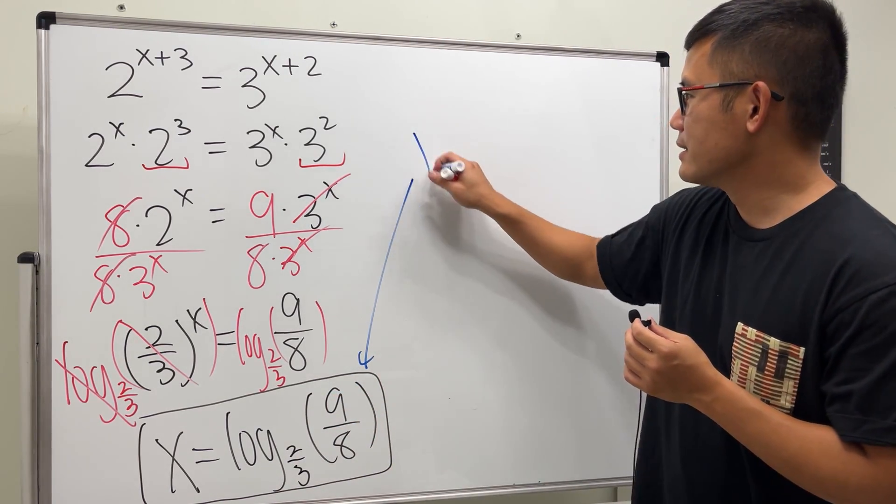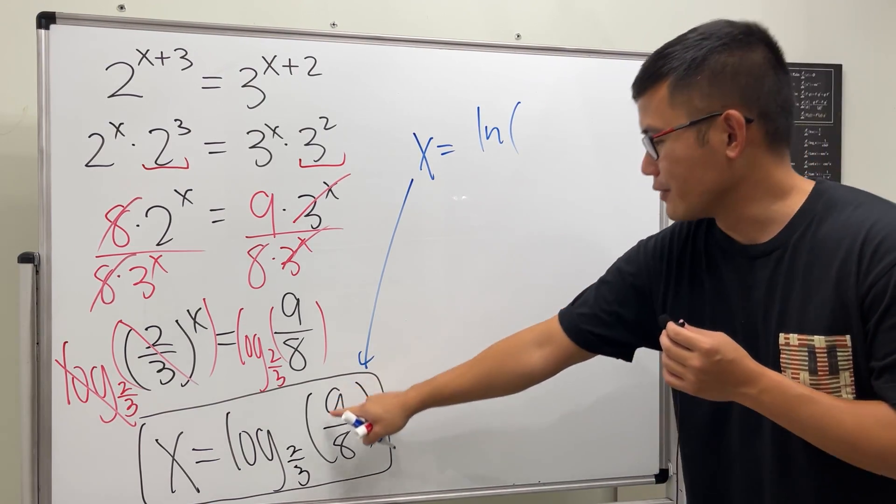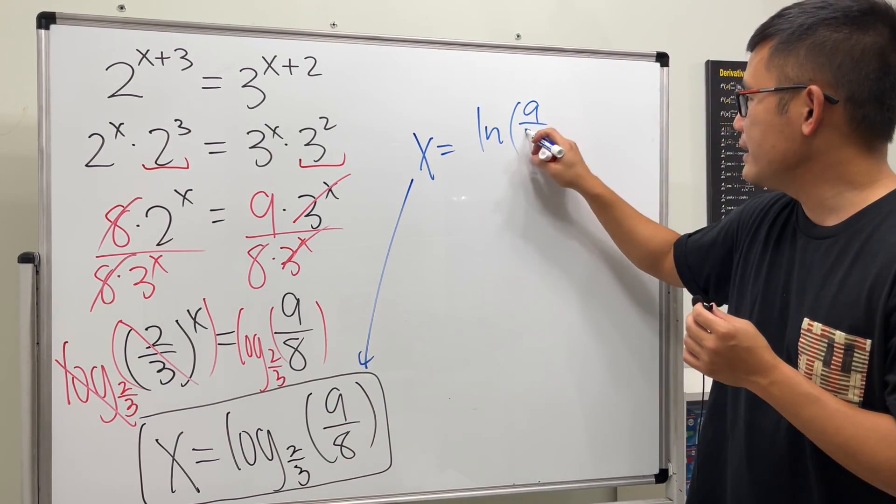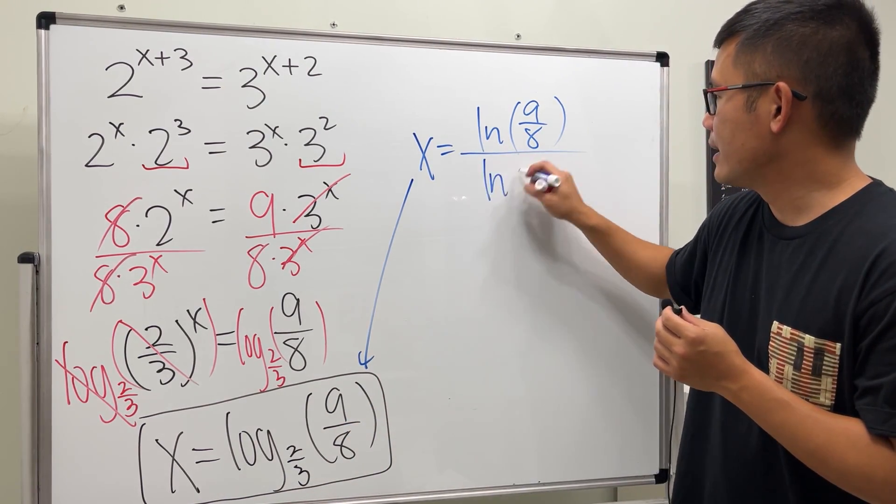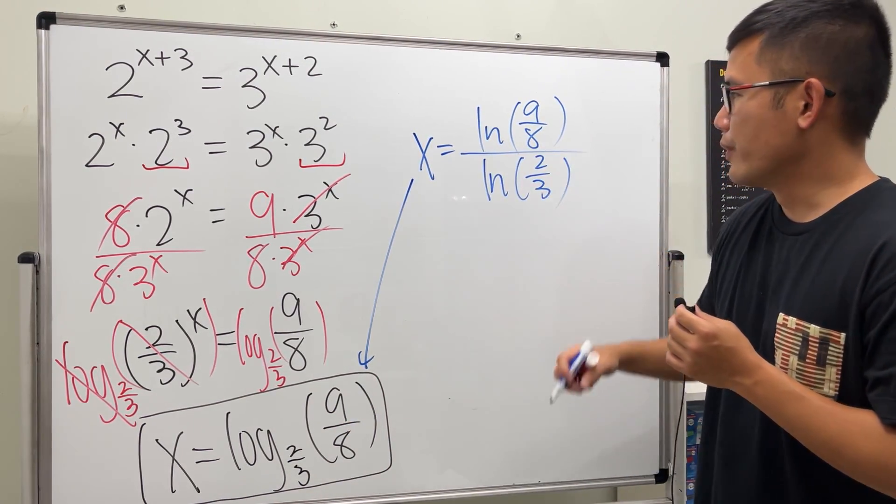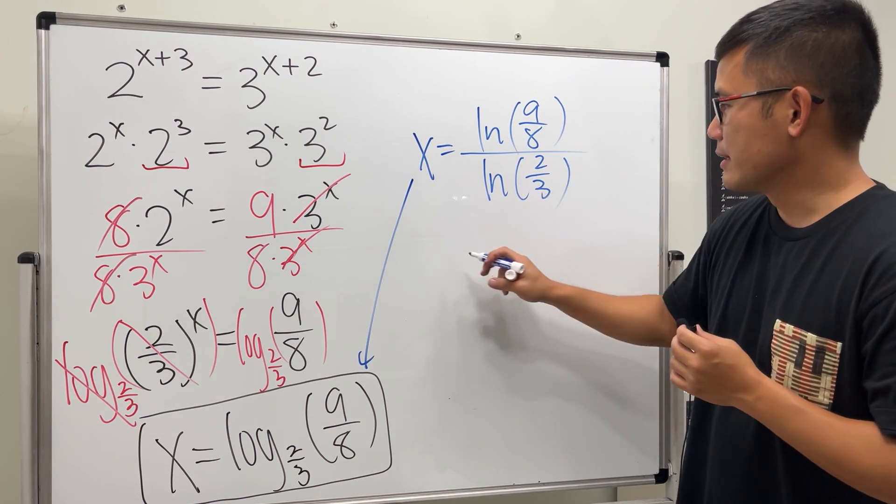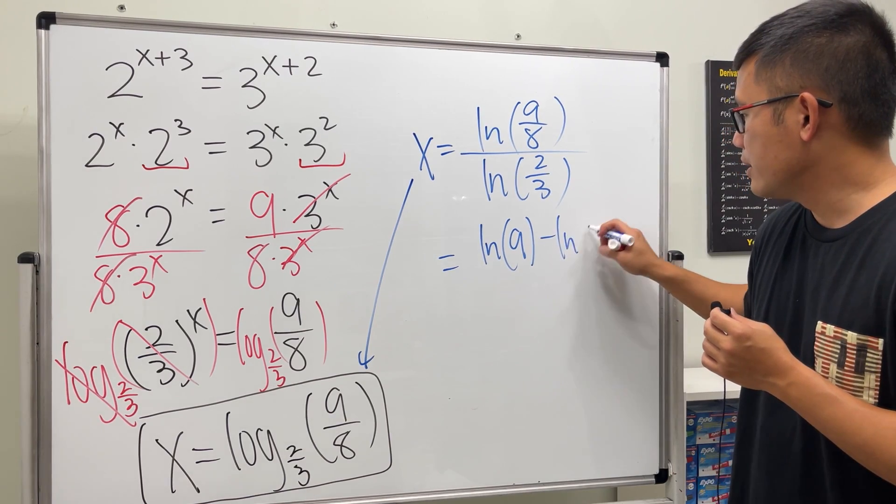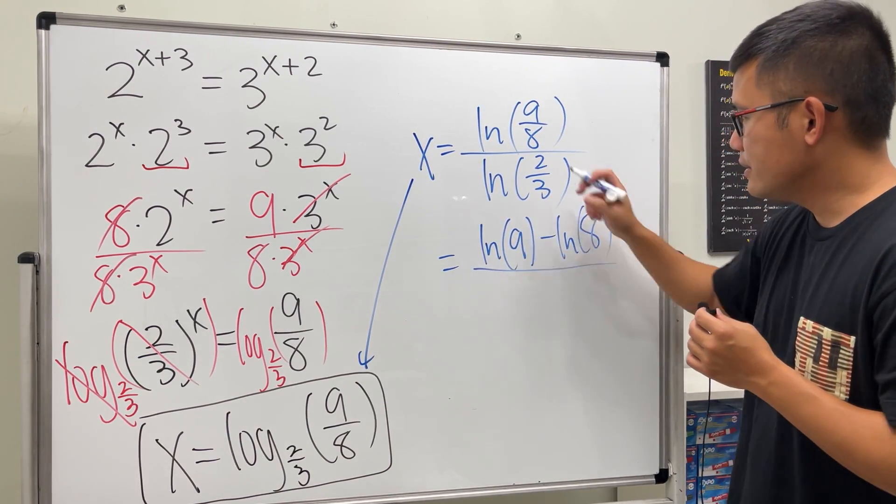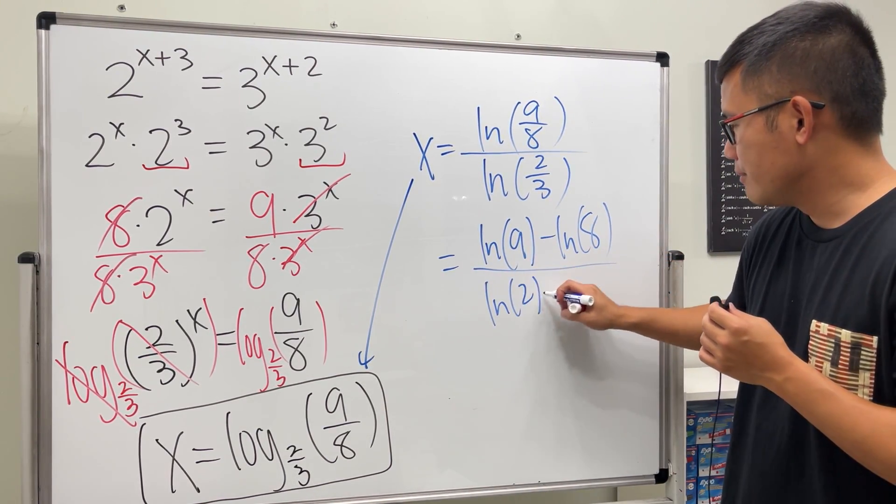Let's use ln, so x is equal to ln of 9 over 8 over ln of 2 over 3. And then guess what, we can break this apart which is ln of 9 minus ln of 8 over ln 2 minus ln 3.